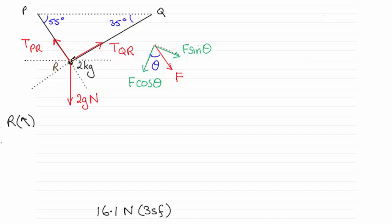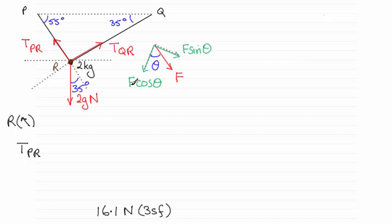If that's 55 degrees and knowing that this is 90 degrees, this angle in here must be 35 degrees — I'll mark that in. So I've got the full tension TPR acting in the positive direction, and then the component of the weight 2g acting in the opposite direction. The weight splits into two components; the perpendicular one has no effect. The component along our direction contains the angle of 35 degrees, so it's 2g cosine 35 degrees, and because it acts opposite to our arrow it's negative.